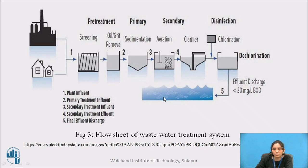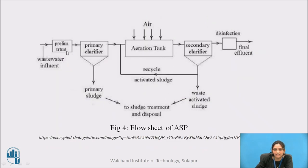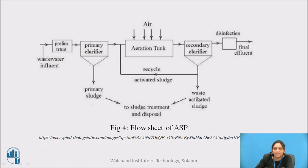The treated water may then be disposed into a natural source of water or used for agriculture purposes. This is an alternate flow chart: pre-treatment, then primary clarifier, then aeration, then secondary clarifier, then chlorination, and finally it is ready for disposal. The sludge from the primary treatment — called primary sludge — also goes for some treatment before disposal. The sludge from the secondary treatment is called activated sludge, and it also goes for treatment before disposal.